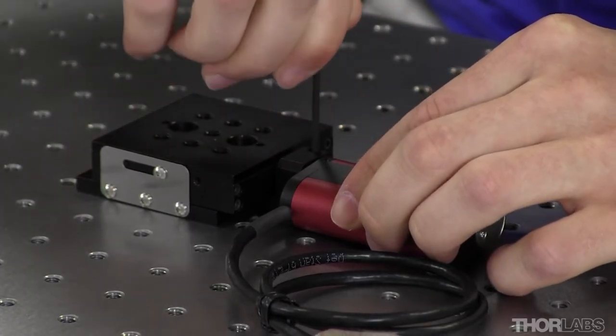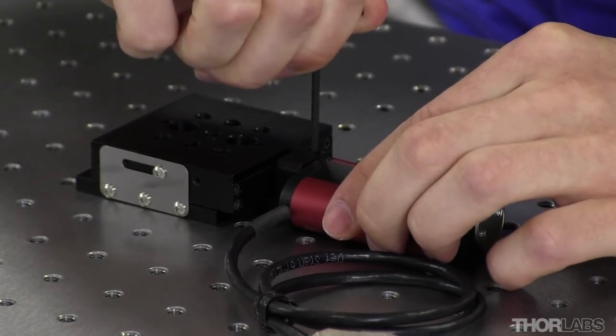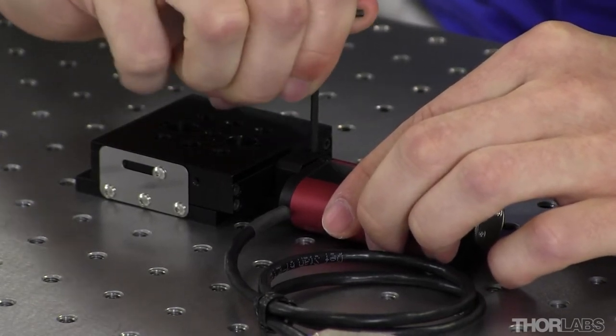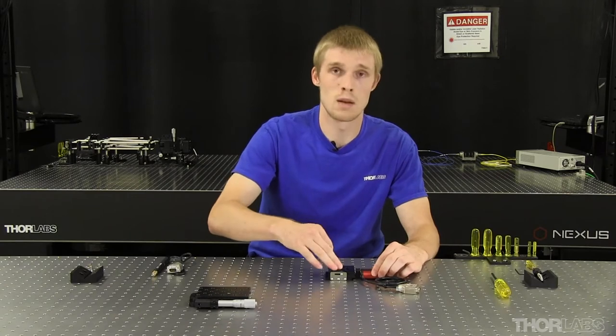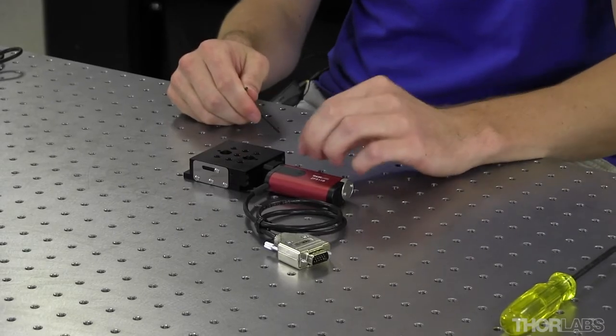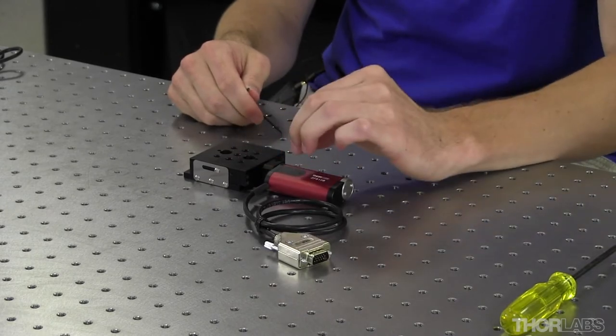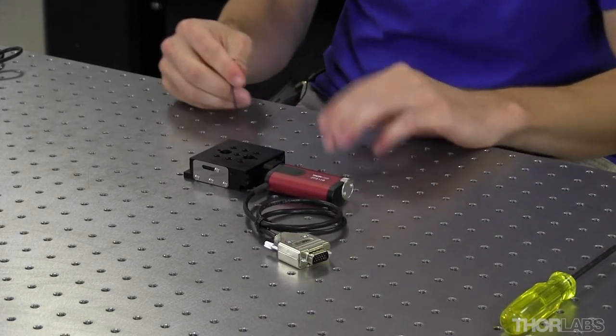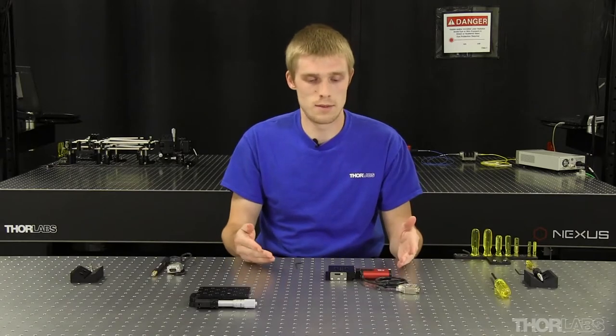and tighten down with that same hex key. We want to ensure that it is snug so that the spring load of the top plate is not going to push the actuator out of the barrel clamp but not too tight so that the clamp compresses down on the barrel and potentially affects the linearity of the actuator. And now we have a half inch travel motorized translation stage.